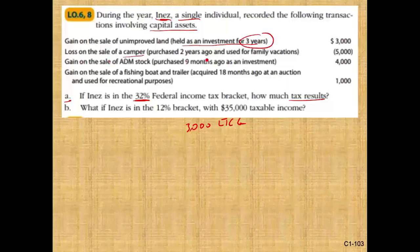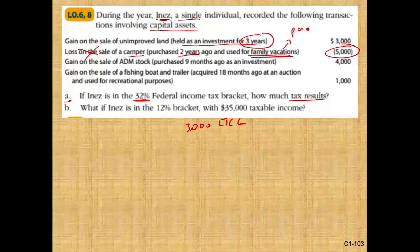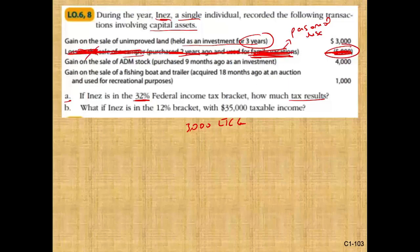Loss on sale of a camper purchased two years ago and used for family vacation, $5,000. It's two years, it's long-term, it's a loss — so it's a long-term loss? Absolutely not. It's used for family vacation, so it's a personal use asset. What do we do with personal use assets? We can't do anything with it. If taxpayers could use their personal use asset losses, you would sell some of your old stuff and claim losses and no one would pay taxes. So be careful — because it says family vacation, that's why it's personal use.